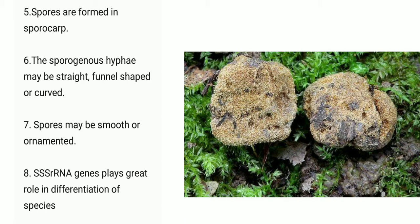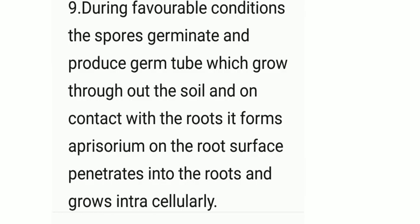Point seven: spores may be smooth or ornamented. Point eight: SSU rRNA genes play a great role in the differentiation of species. Point nine: during favorable conditions, the spores germinate and produce a germ tube which grows throughout the soil and makes contact with the root.